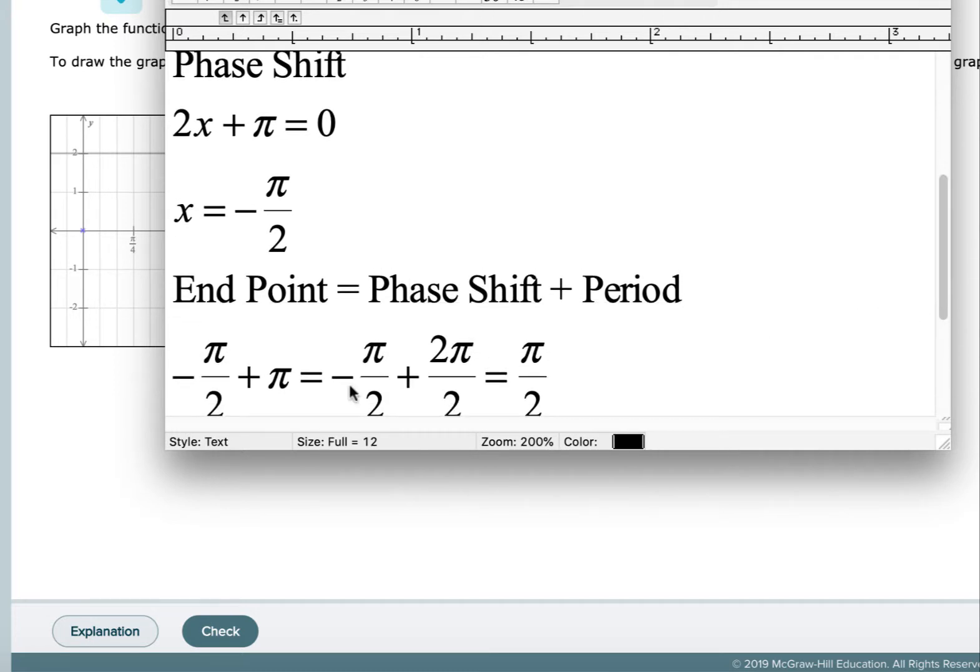So when I take negative π over 2 plus π, I get a common denominator: negative 1π over 2 and 2π over 2, negative 1 and 2 is 1. So we get that it's π over 2. So it's going to be negative π over 2 on one end and then π over 2 on the other.